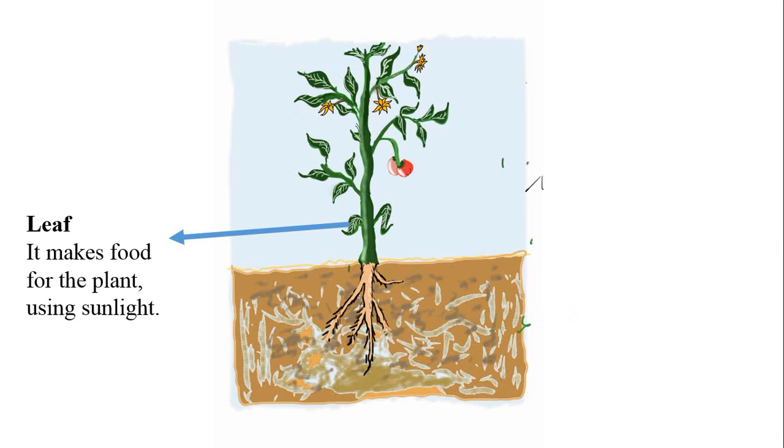This is a leaf. A leaf makes food for the plant using sunlight.